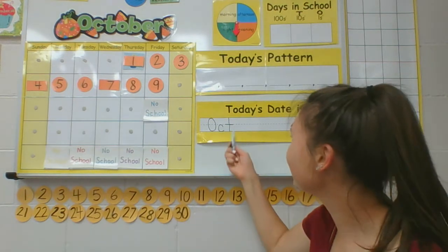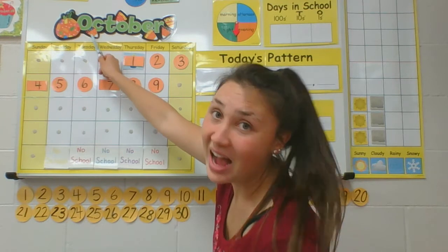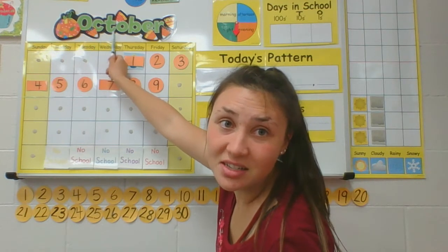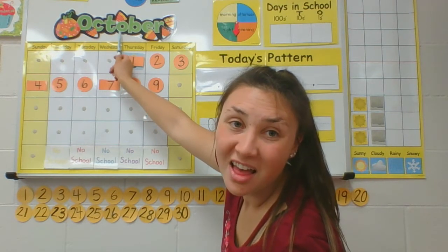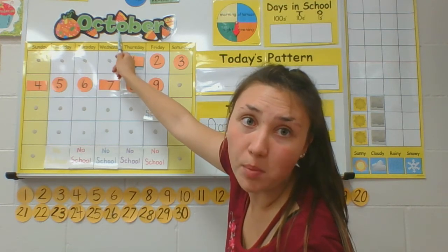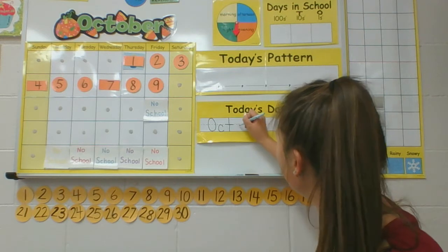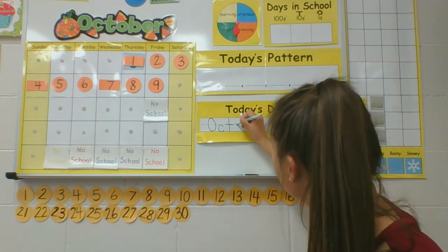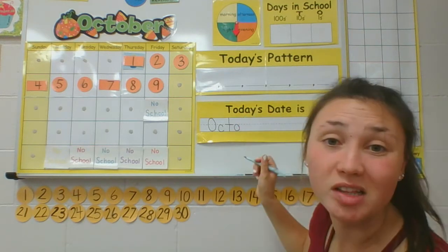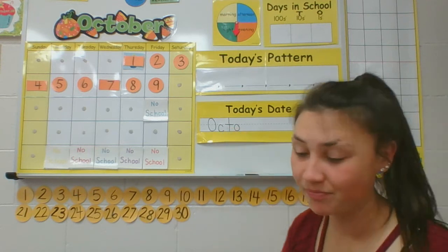What comes next after the T? O, c, t, o. This O says the O sound — October. So we're going to make another O. This time it's a lowercase one. Little O, big O.